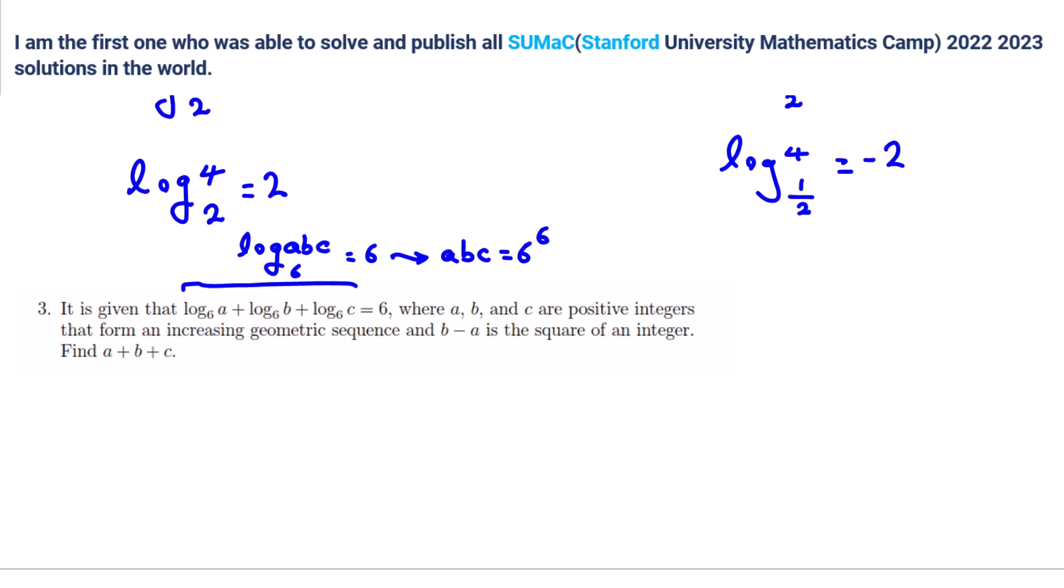Sorry. Being... You can rewrite B minus A is like M squared. And then ABC are positive integers form an increasing geometric sequence. So does that mean that A M... A like... Let's say A M is equal to B and B M is equal to C.